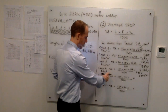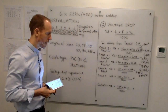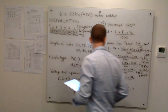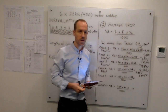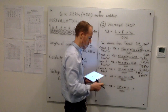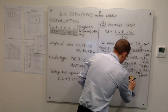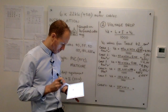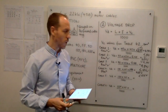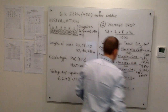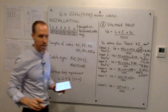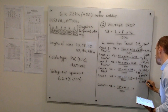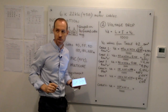Moving on to cable 5 at 180 metres — let's try a 25mm² cable with VC of 1.54. We can see that will be greater than 10 volts, and it is. Therefore, for cable 5 we need to try a 35mm² cable. From table 42, the VC value for 35mm² is 1.11. That works out to be 8.99 volts, which is less than 10 volts. So for cable 5, we need to use at least a 35mm² cable.